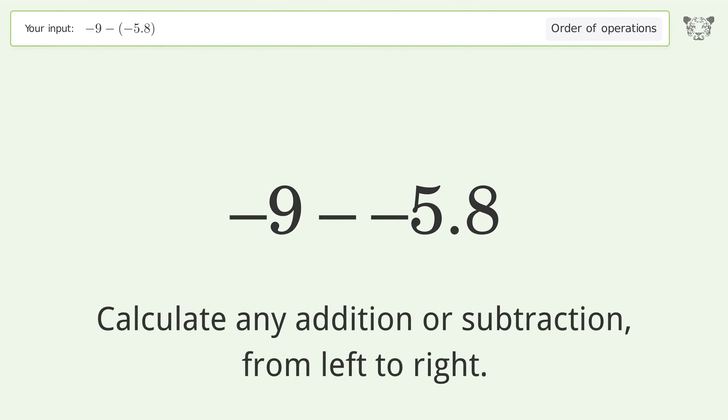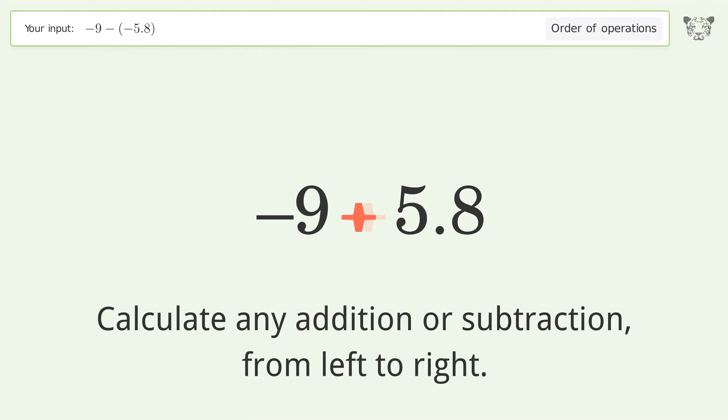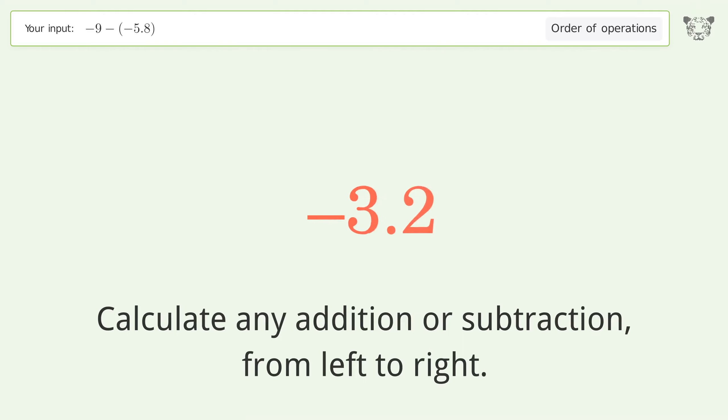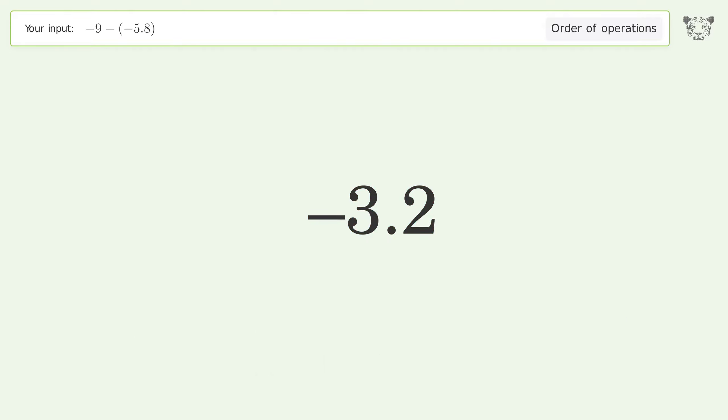Calculate any addition or subtraction from left to right. Minus and minus make a plus, so negative 9 plus 5.8 equals negative 3.2. And so the final result is negative 3.2.